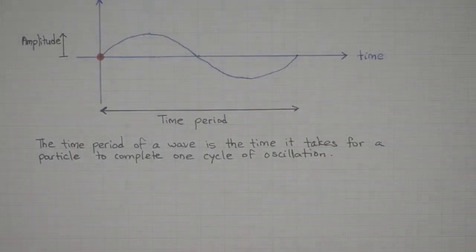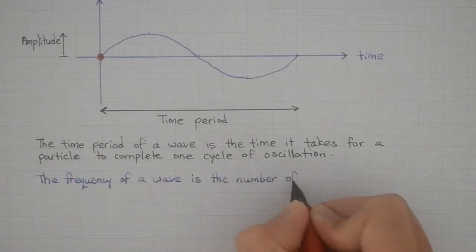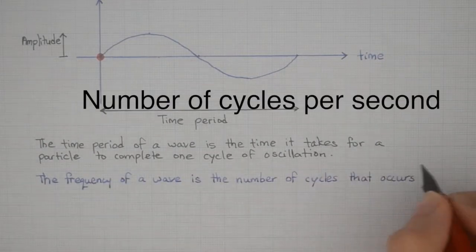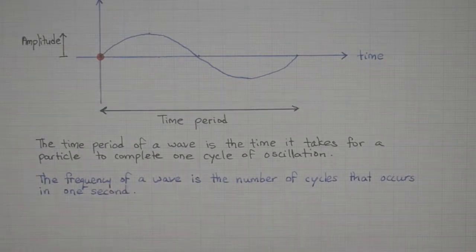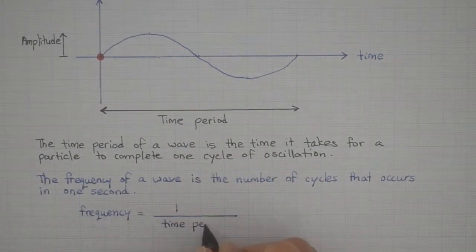The inverse of this is the frequency. Frequency is the number of cycles that can occur within one second. The units of time period is seconds and the units of frequency is hertz.